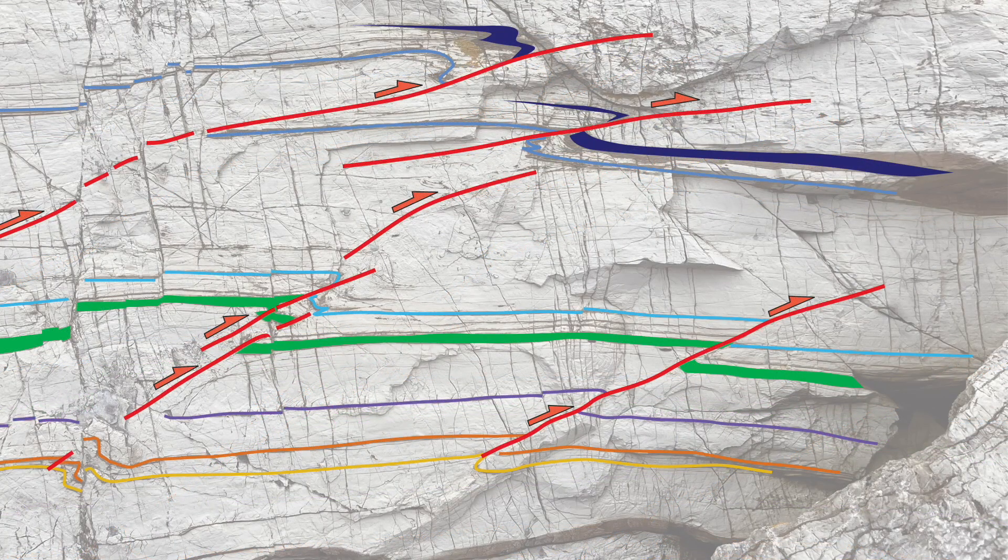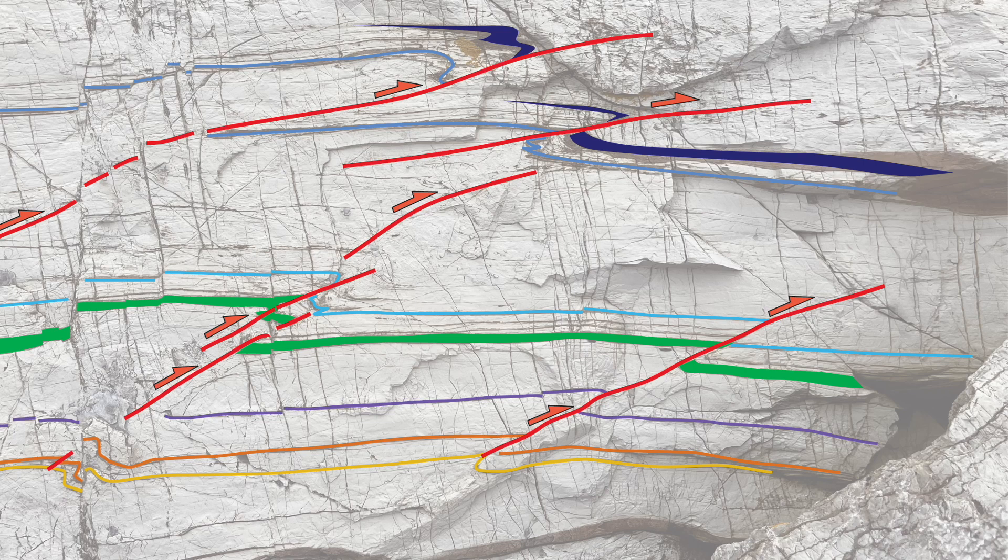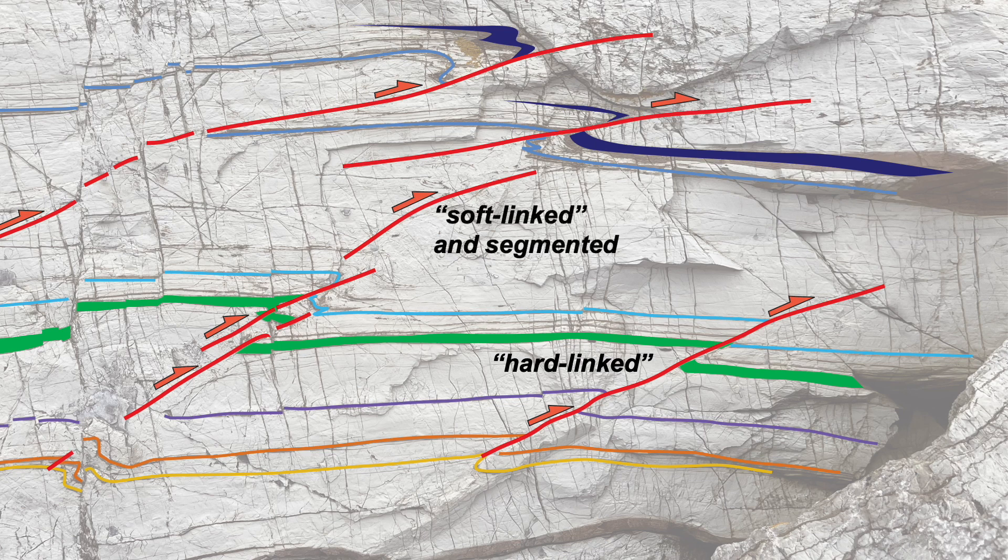So even in the same rocks, over very short distances, thrust zones can have different geometries, some hard-linked, some soft-linked.